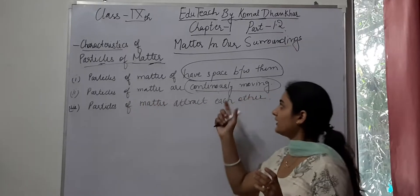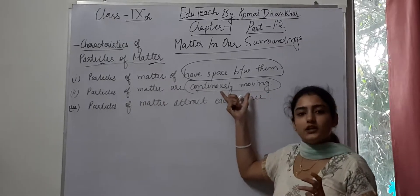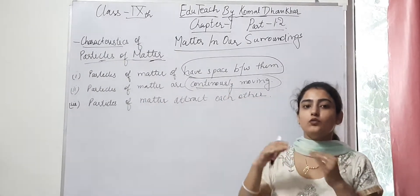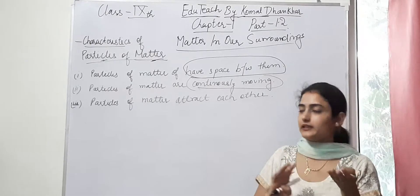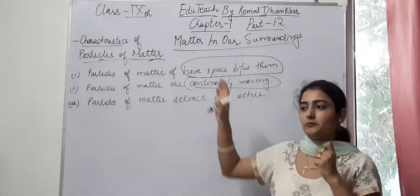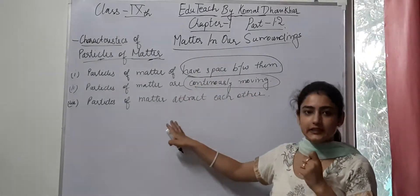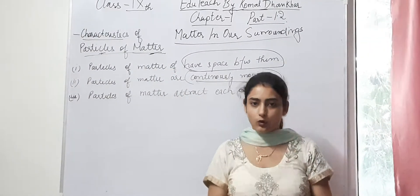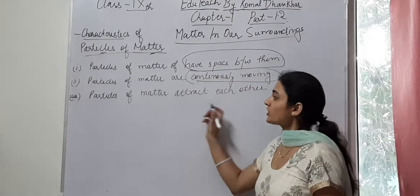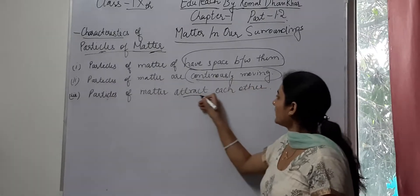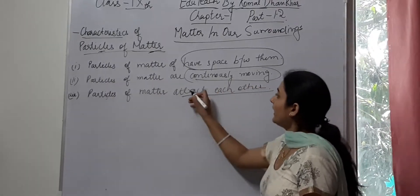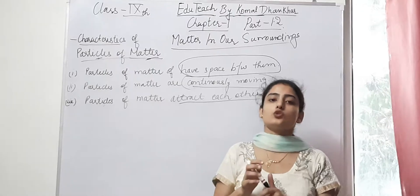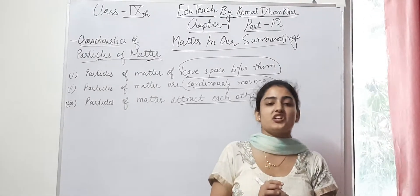The particles of matter are continuously moving. This can vary — they can move more or less according to the state, and the characteristics will vary accordingly. The particles of matter also attract each other. The force of attraction can vary — it can be more or less.